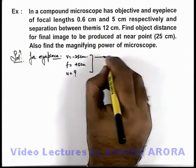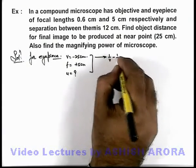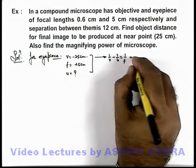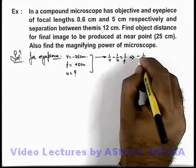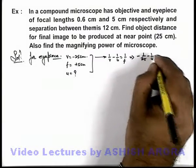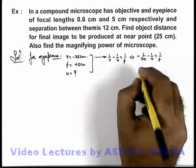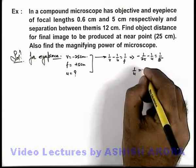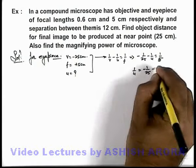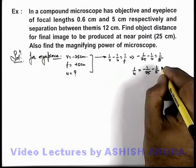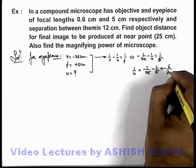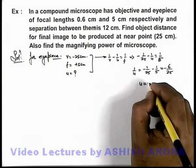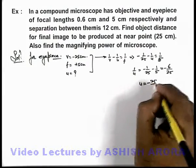Using the lens formula: 1/v minus 1/u equals 1/f. Substituting the values gives us: minus 1/25 minus 1/u equals 1/5. On simplifying, 1/u equals minus 1/25 minus 1/5, which gives us minus 6/25. That means the object distance from the eyepiece lens will be minus 25/6 centimeters.